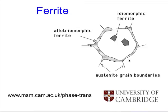Idiomorphic ferrite is ferrite which is intragranularly nucleated, perhaps on particles of dirt - manganese sulphide inclusions and so forth. Because it is not in contact with the austenite grain surfaces, it develops crystallographic facets.